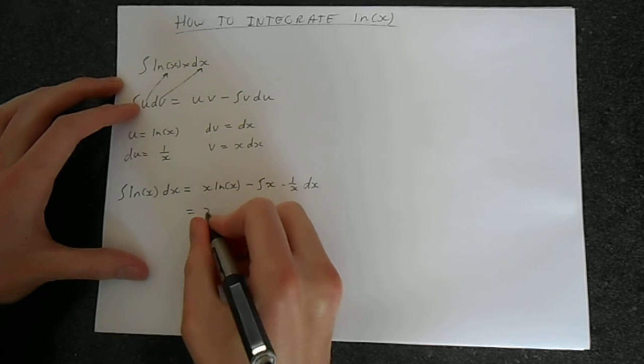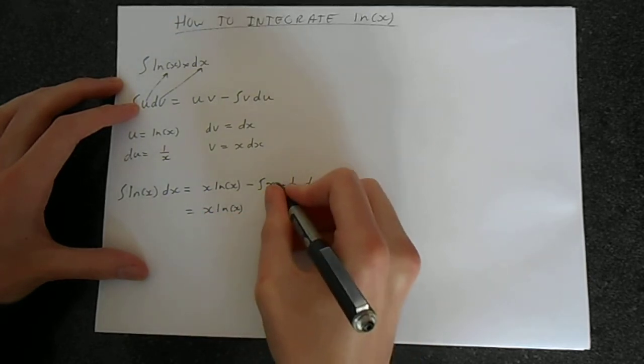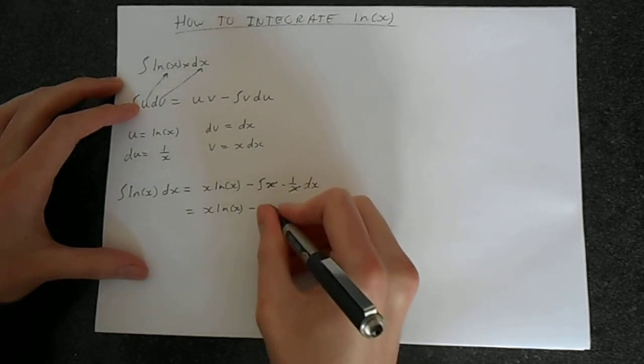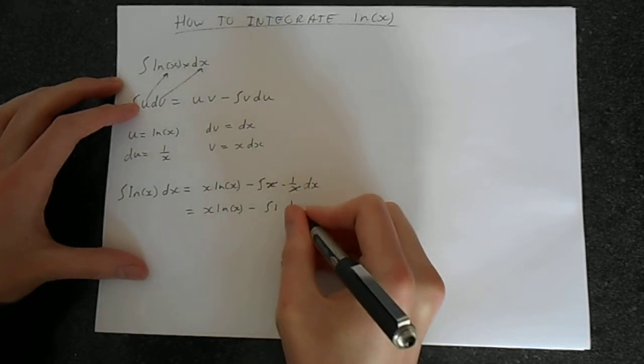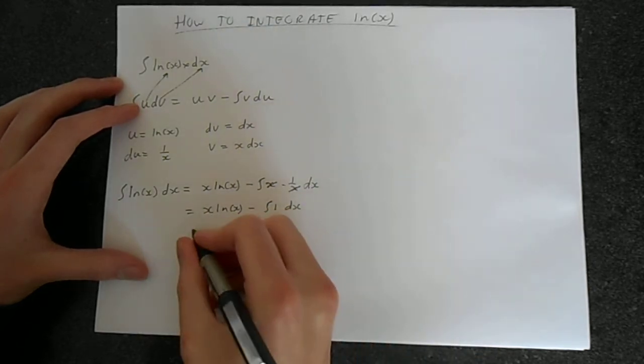So we can say that this is x ln x. The x's will cancel here. So we're left with the integral of 1 dx. And well, this is just the integral of dx, which is, of course, x.